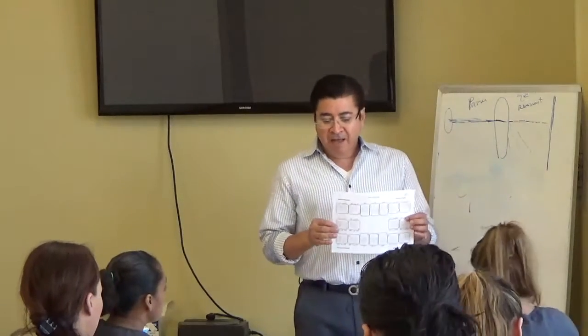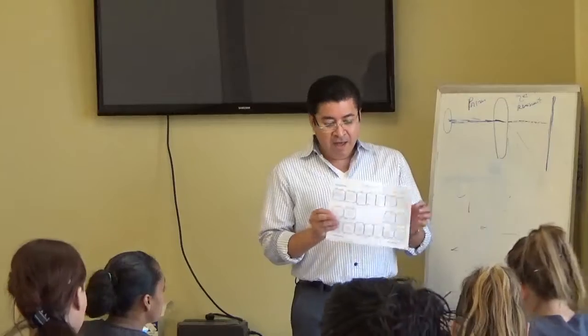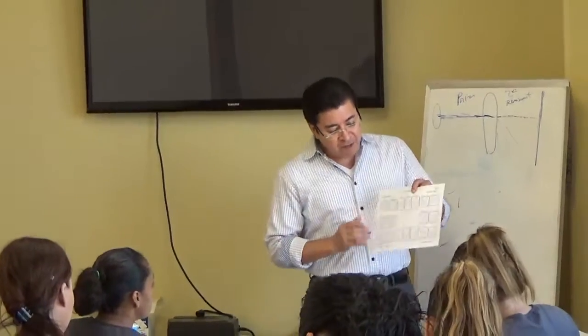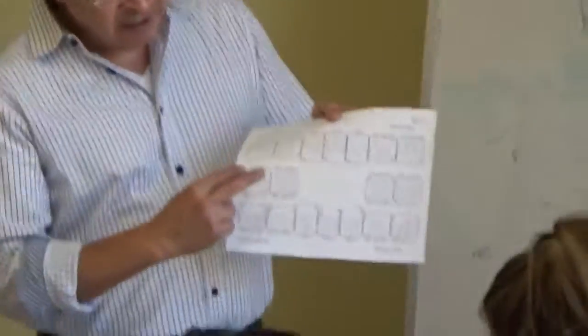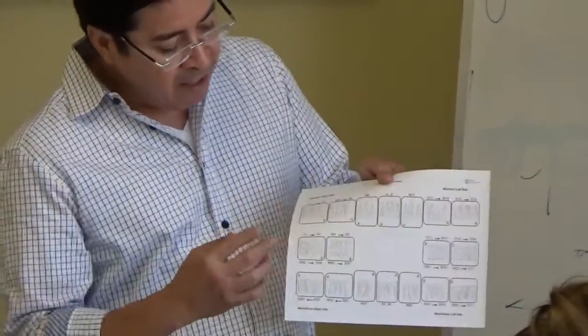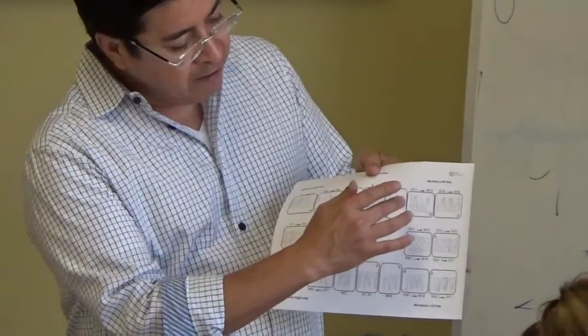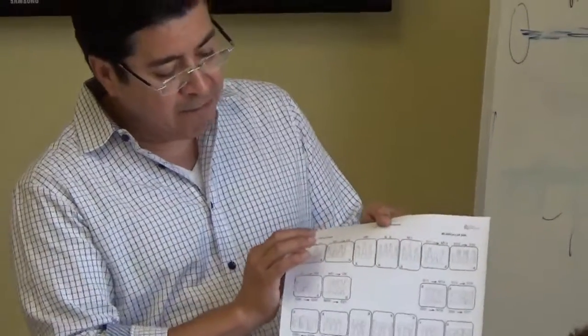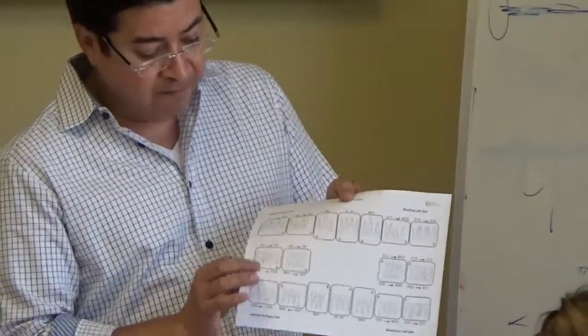This is a template of a full-mouth set of X-rays. When we take a full-mouth set of X-rays, it consists of four bite wings — two bite wings on the right side and two bite wings on the left side. It also consists of seven PAs on the top and seven PAs on the bottom teeth.